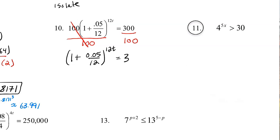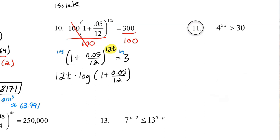Now it's isolated. And like we were doing in the previous video, we're going to log both sides — log this side, log this side. When we log both sides, remember the exponent 12T is going to come down out in front of the log. So I'm going to write that 12T out in front: 12T times log(1 + 0.05/12) equals log 3.